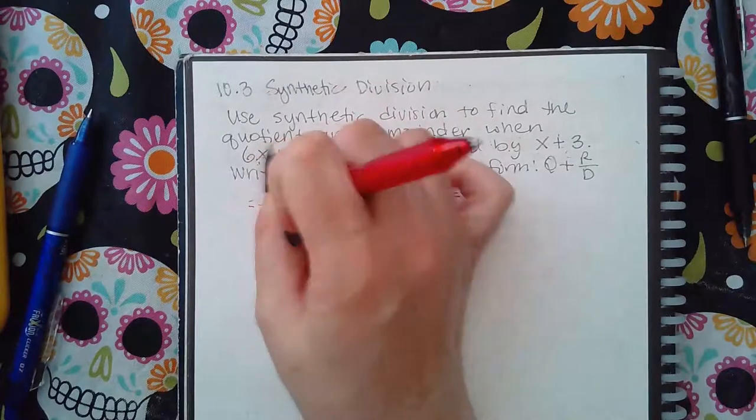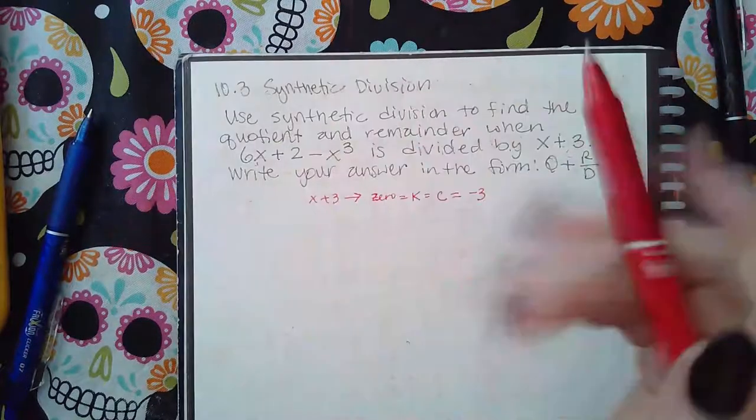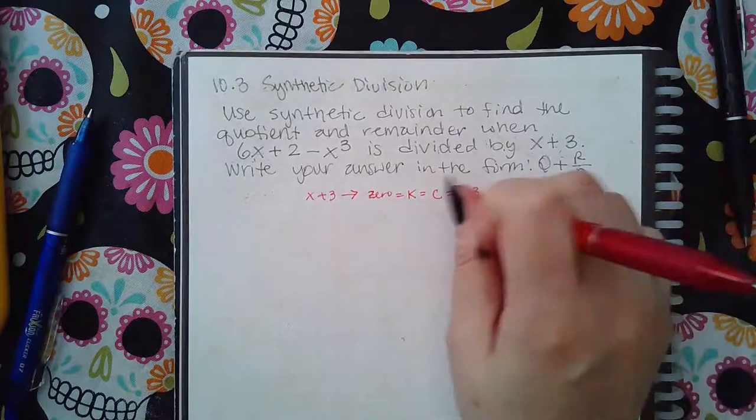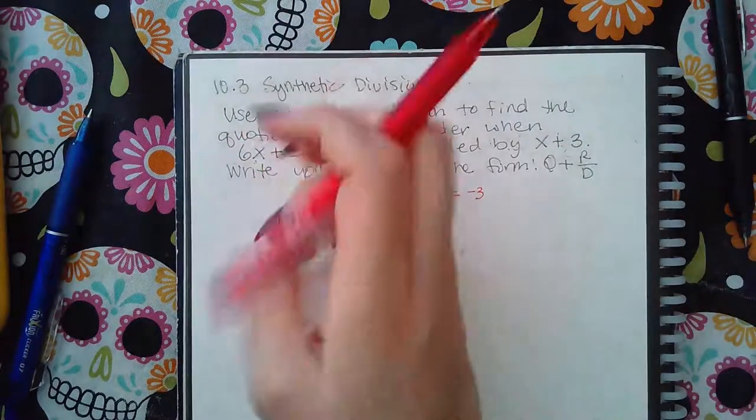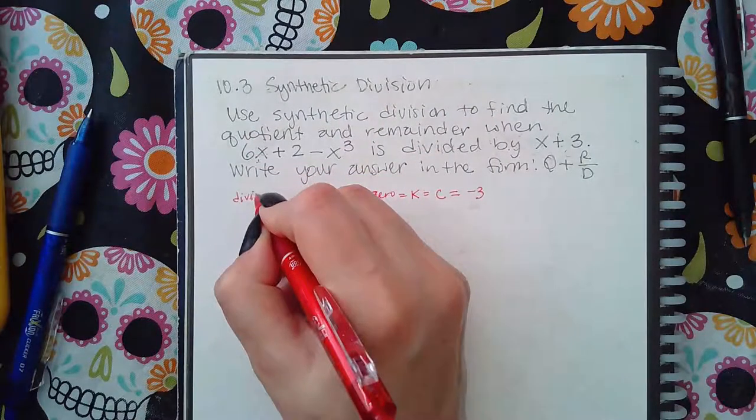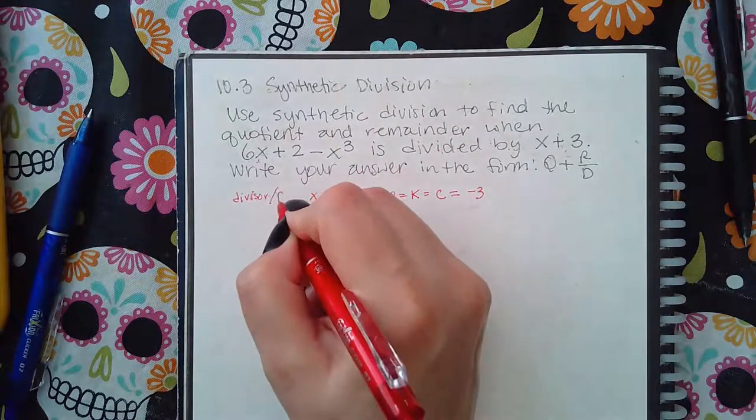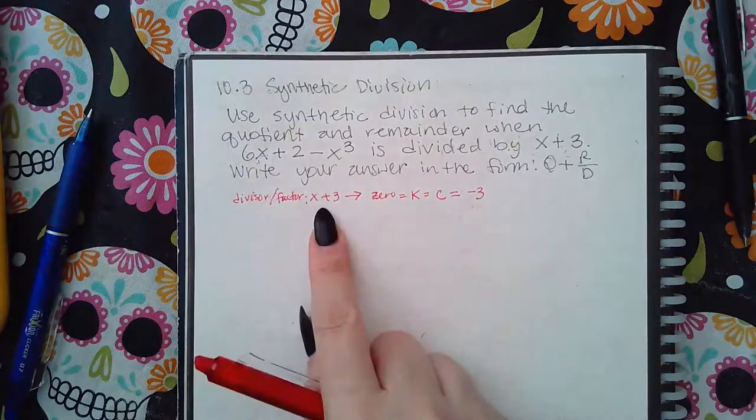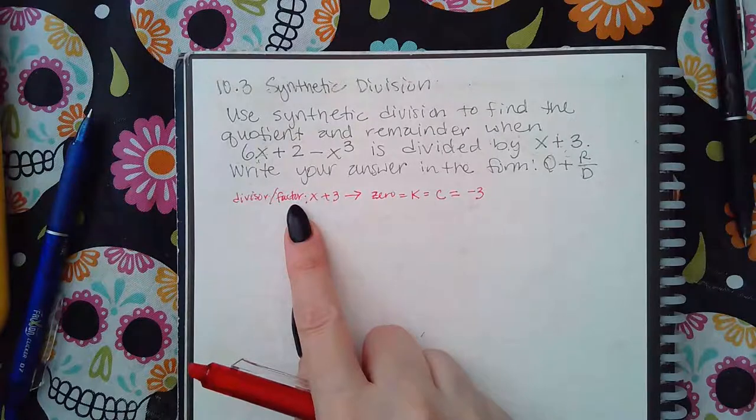Now, we'll just call this the zero. Remember, this is your divisor, what you're dividing by, or your factor. That's what this is. We'll talk about the factor part in another topic.